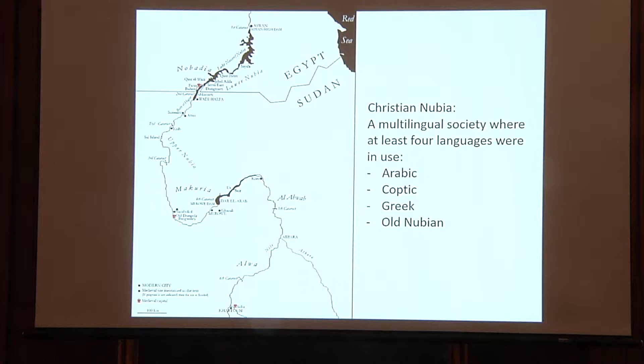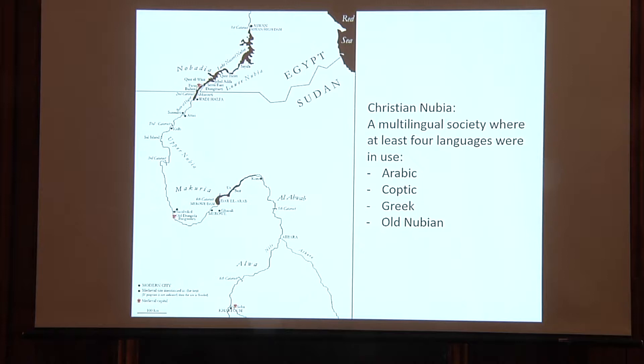The territory between the first and third cataracts belonged to the kingdom of Nobedia, with its capital at Faras. Upper Nubia between the third cataract and the junction of the Nile with the river Atbara was the territory of the kingdom of Makuria, with its capital at Old Dongola. At some point in the 7th century, Makuria annexed Nobedia. To the south, the kingdom of Alwa stretched until an unknown point in central Sudan, with its capital most probably at Soba. Christian Nubia as a term including all these state formations is what has been suggested as the Church of Philip — though this ascription to Philip is what we call today an urban myth.